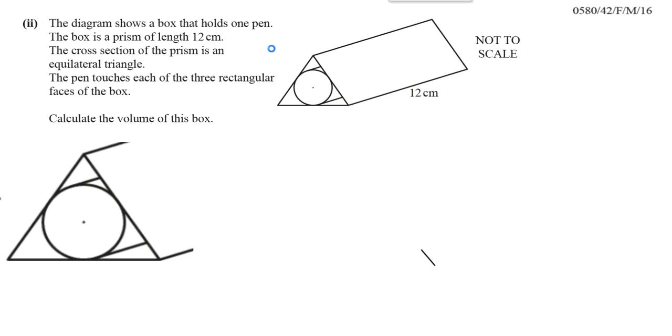So we know the prism is 12 cm long. We know that this is an equilateral triangle of the face, but we don't know its area and we have to find its area. That is our objective, to find the area of that triangle.